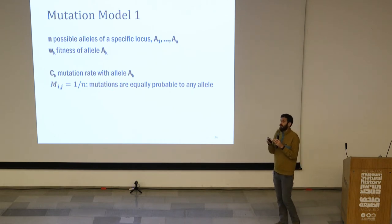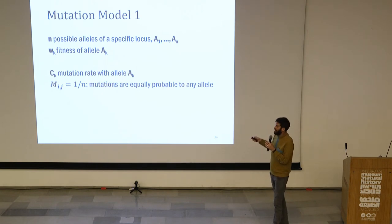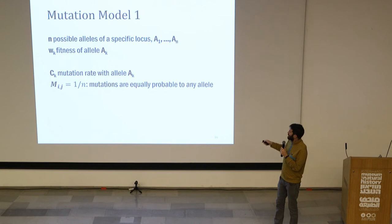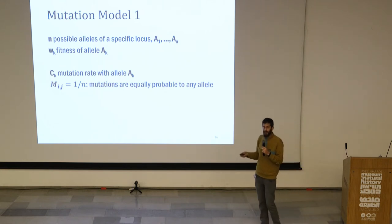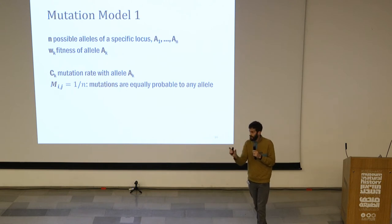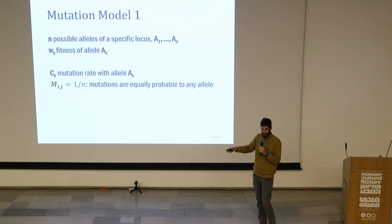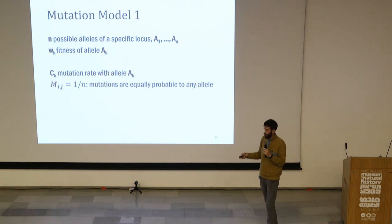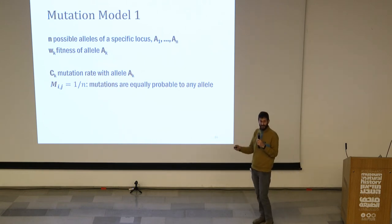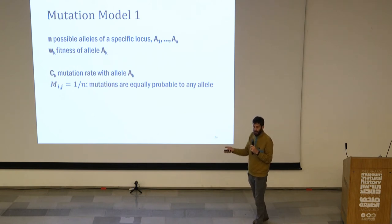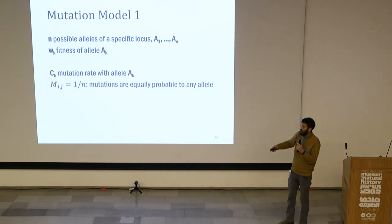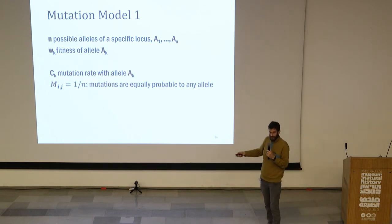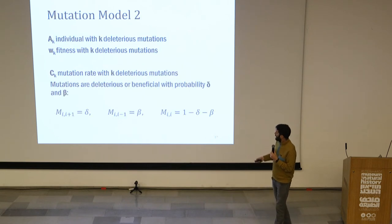Three more concrete models. The first is a mutation model where each type A1, A2 through AN describes a different allele — we're thinking about a single locus and the different alleles at that locus. Each allele has some fitness contributing to the individual in some way. CK will then be the mutation rate of this allele, so we think about an allele that contributes to the mutation rate of the individual or at least the locus. M gives the probability to mutate from one allele to another.